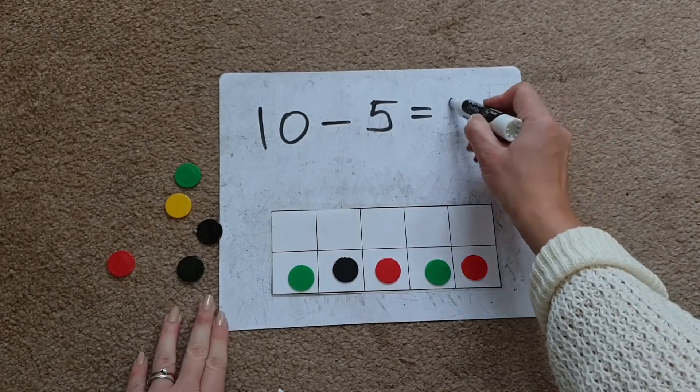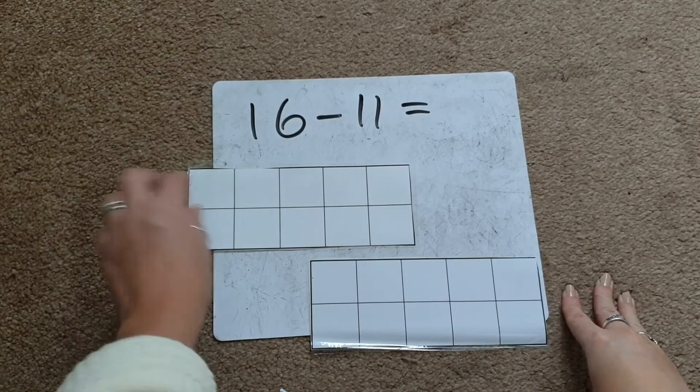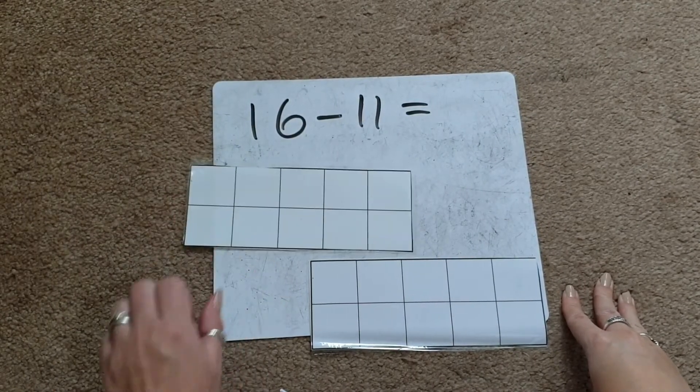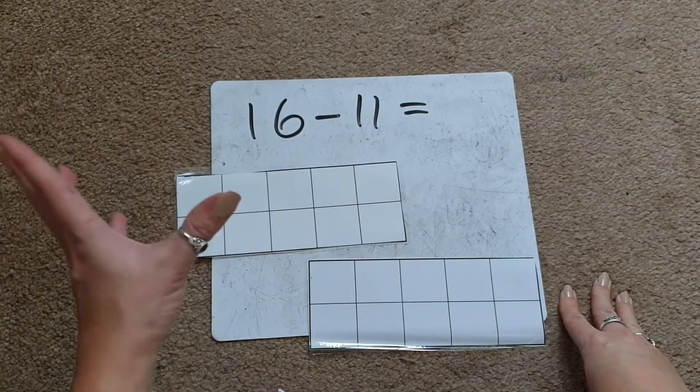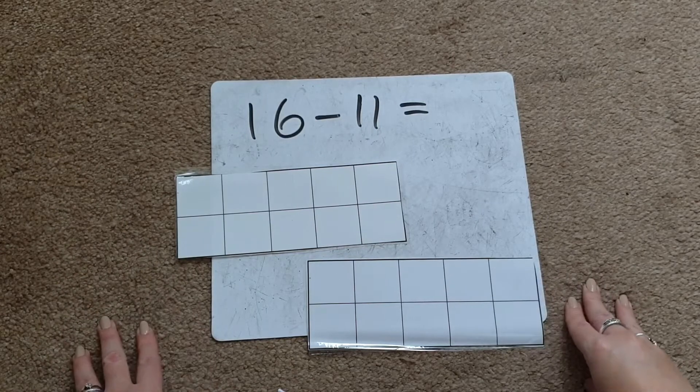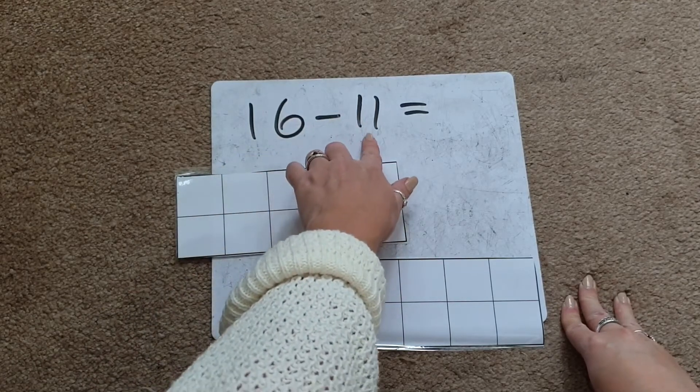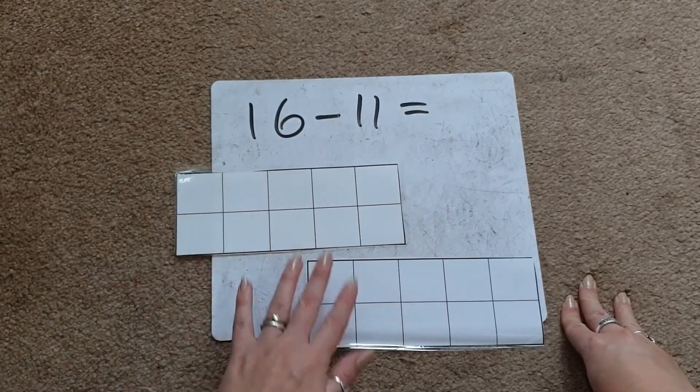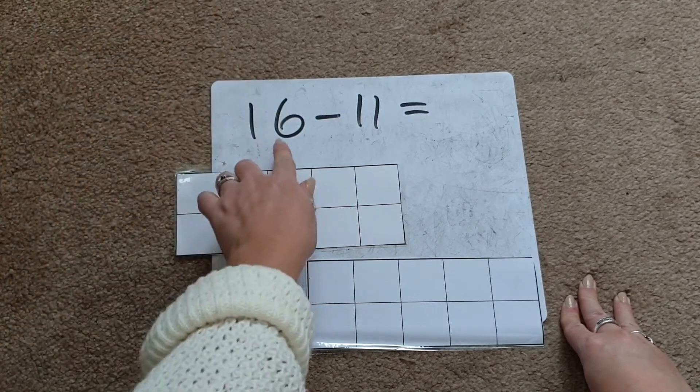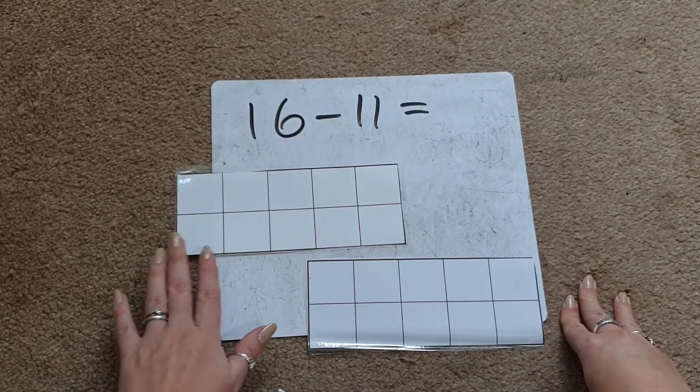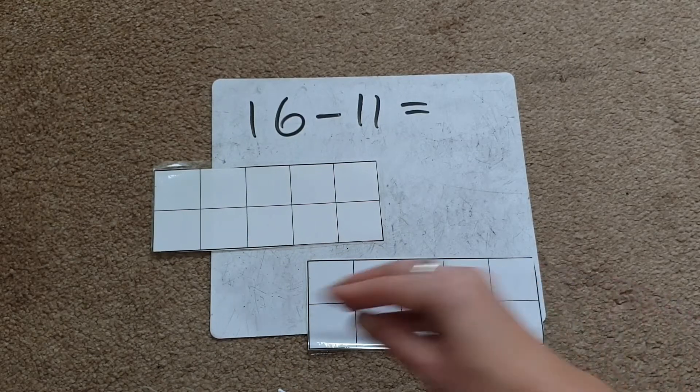When using 10 frames for subtraction, you're not limited to working within 10. You can have as many 10 frames as you want, so you can work up to as high a number as you want, which is great. We're going to do a more challenging calculation: 16 take away 11. We'll need two 10 frames. I would ask the children what number we're starting with - the biggest number, 16. The children would then count out 16 objects.